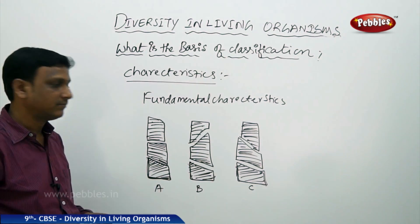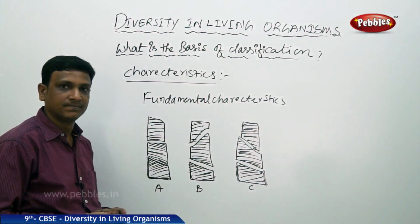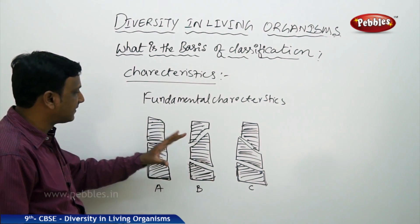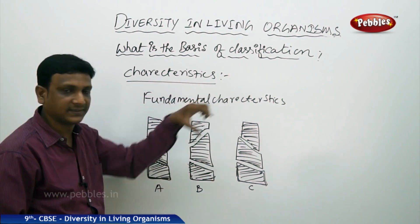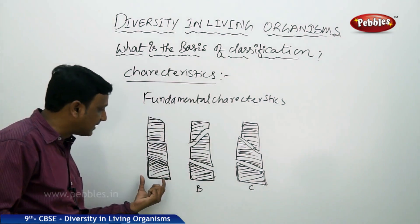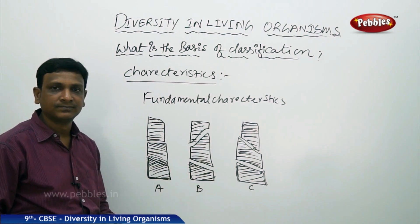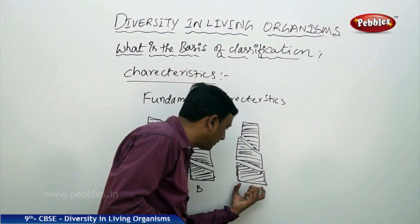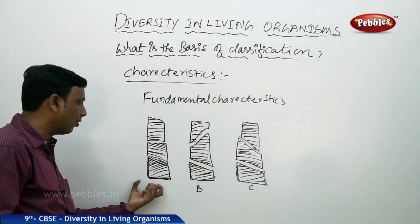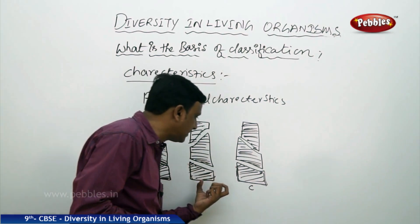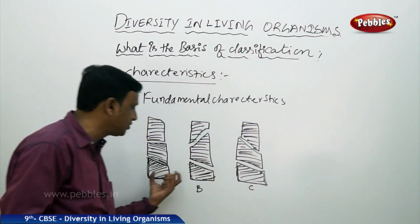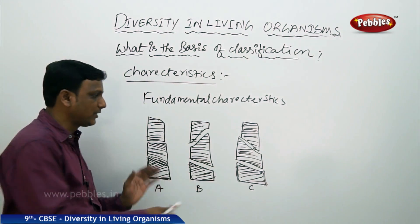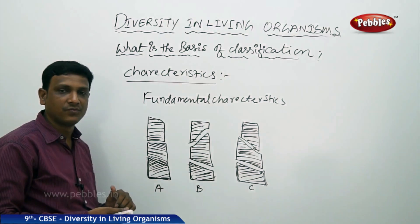When you are grouping different organisms, you cannot compare similarities and differences between top characteristics — you have to consider the fundamental characteristics. If you see the stones of the bottom part of the pillar, the primary stones are of similar shape. That means the primary characters are similar, so you can group them as one group. If you look only at top characteristics, you might say they are different — but those are not the fundamental characteristics.